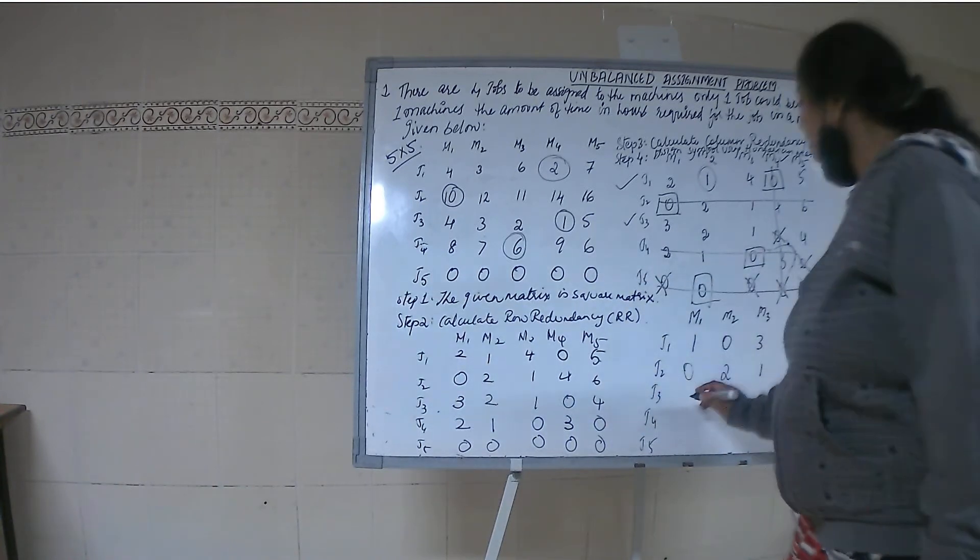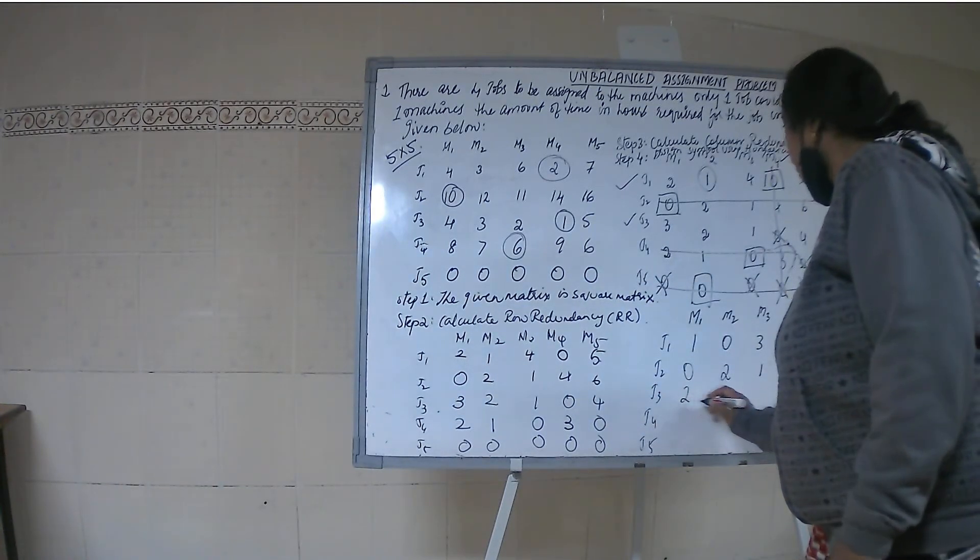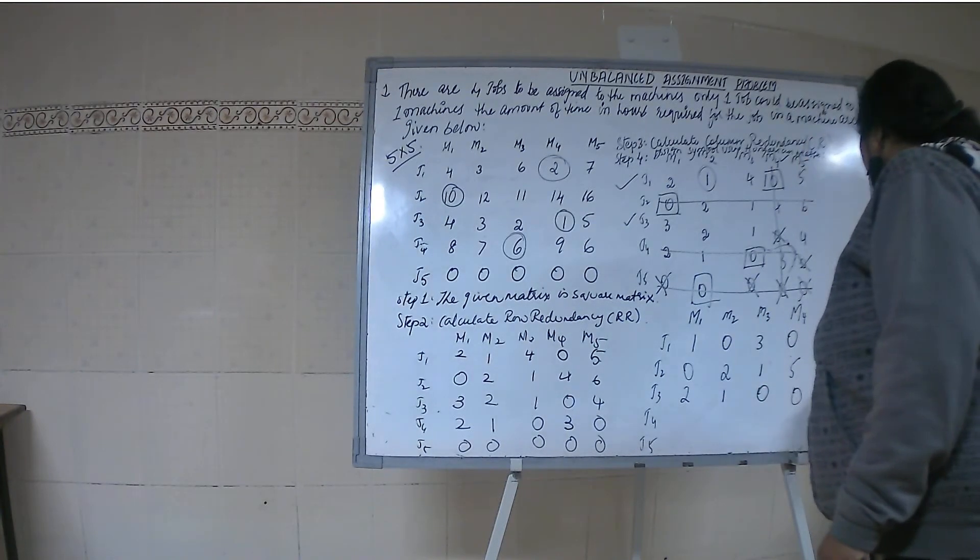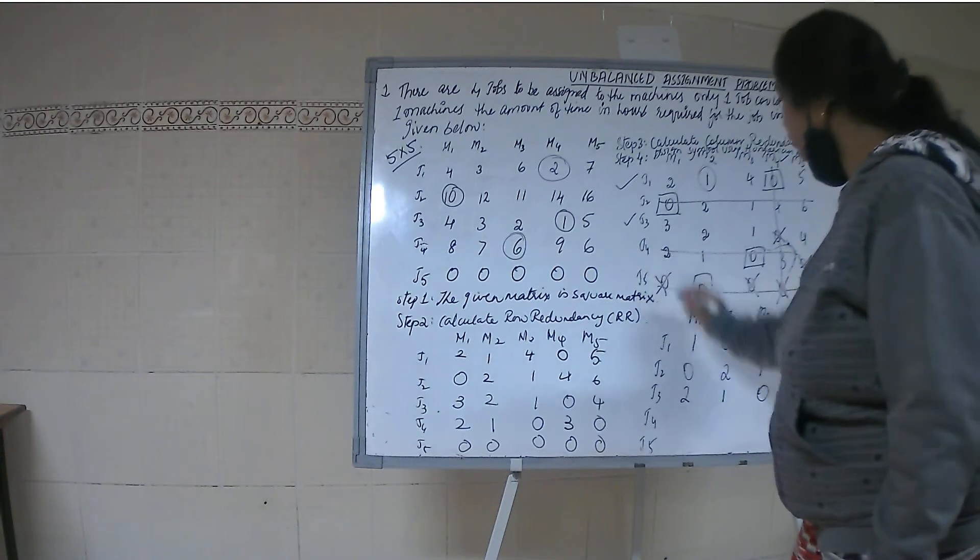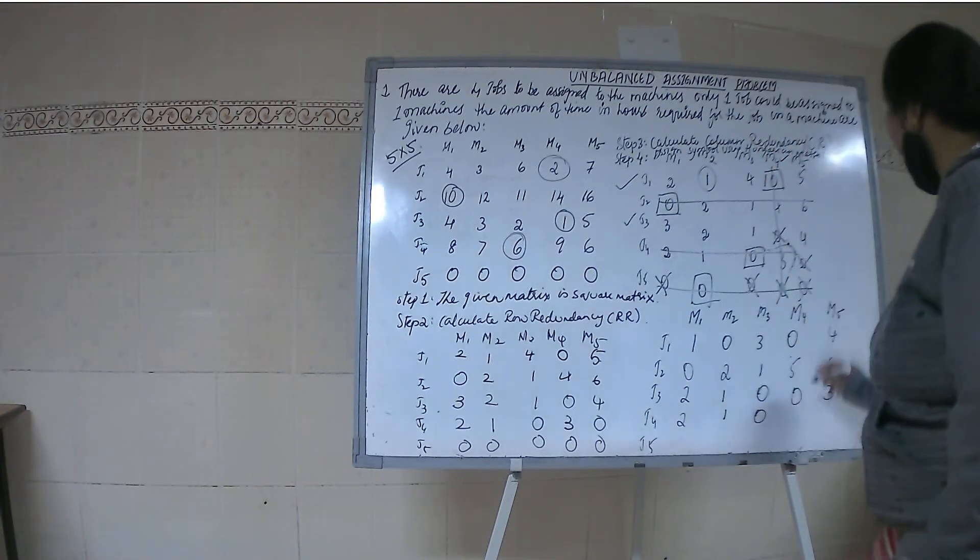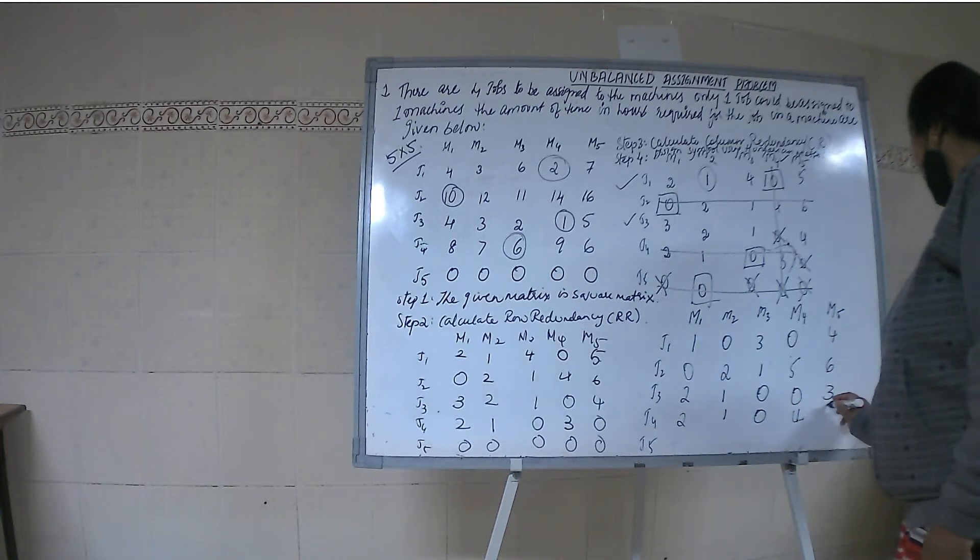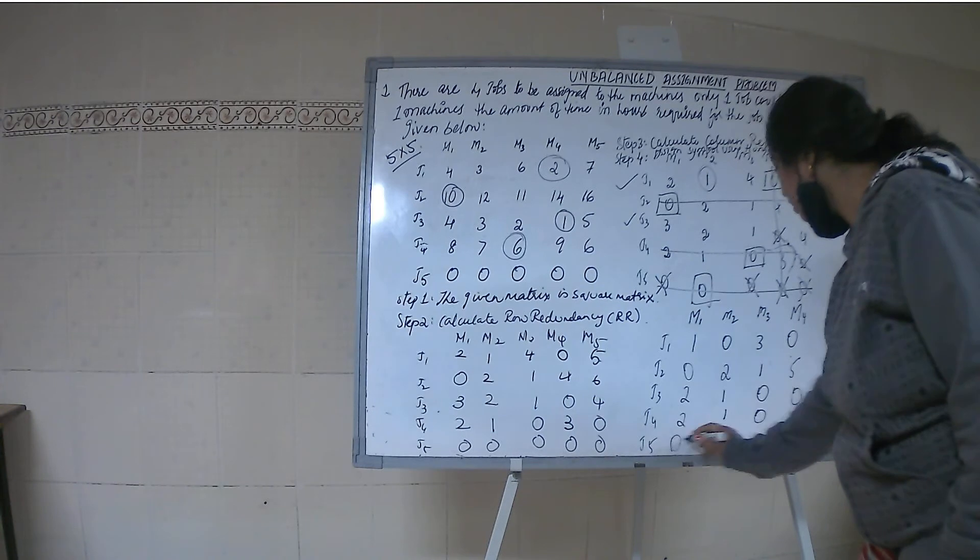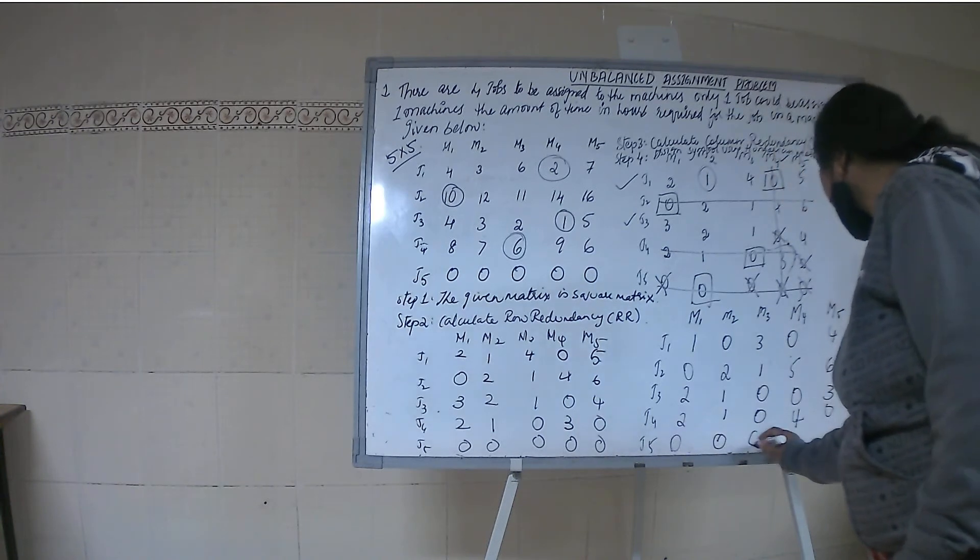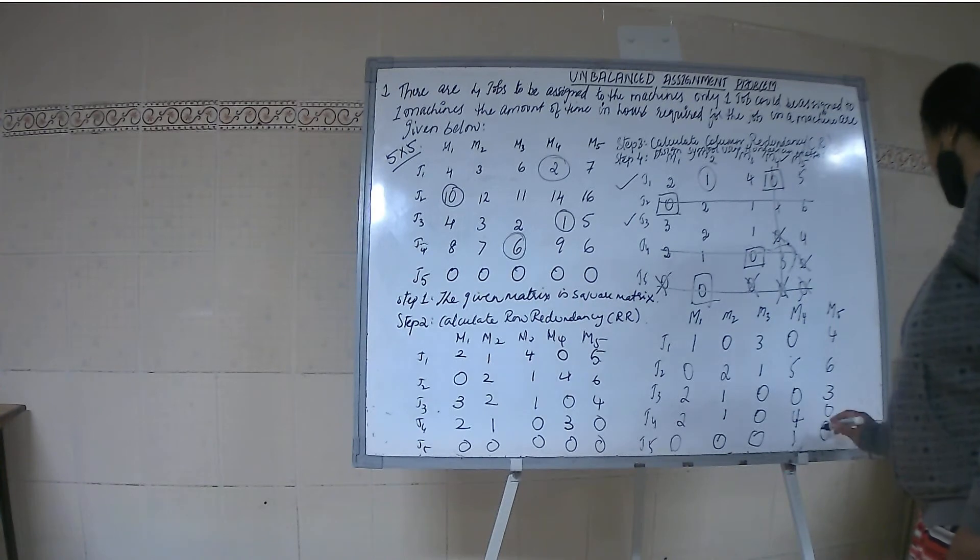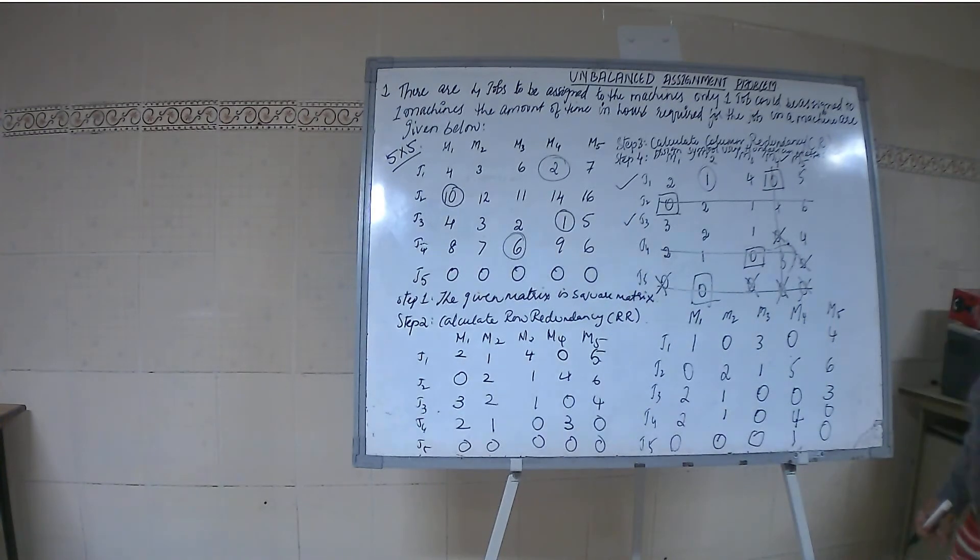Then next it is 0, 0, 0 intersection, 1, 0. Now we will do the assignment for this.